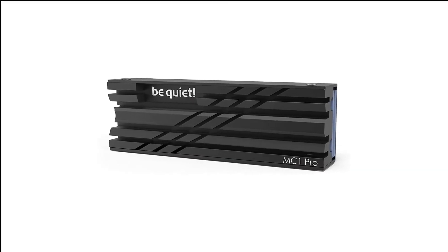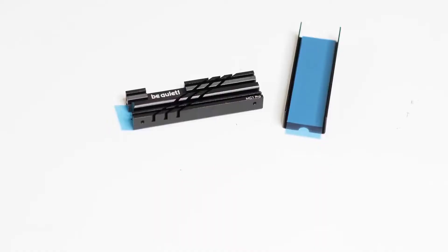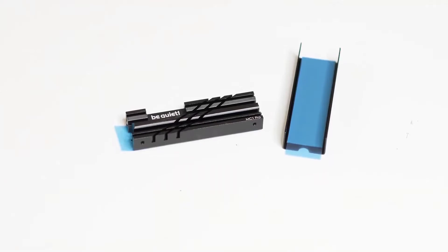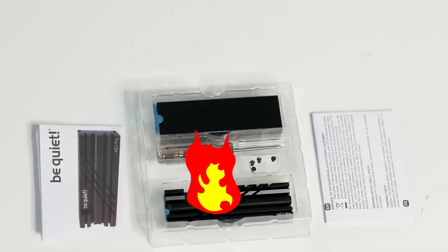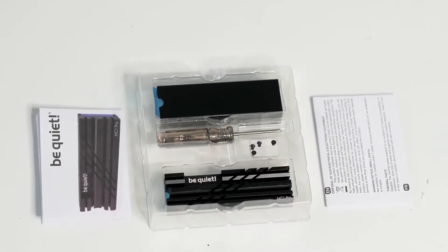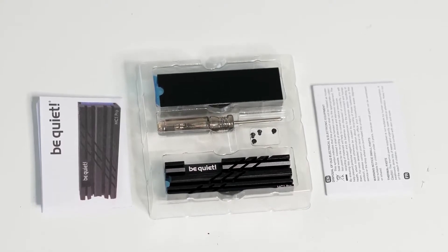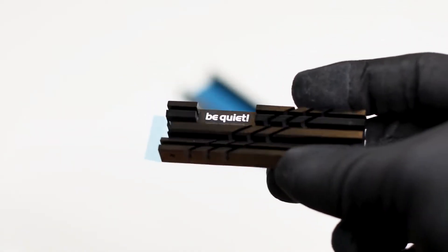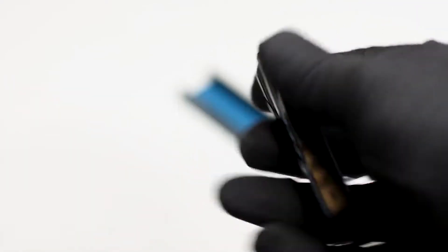Number 9 in my list is BeQuiet BZ003 MC1 Pro M2 SSD. MC1 Pro offers a lot of value for the price, especially thanks to the high-quality heat pipe. BeQuiet is renowned for its designs and well-built products, and this M2 SSD heatsink doesn't disappoint. If you want an affordable NVMe cooling system from a reputable brand, this is it.